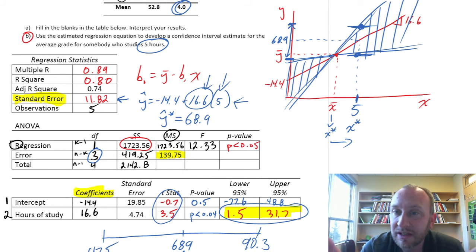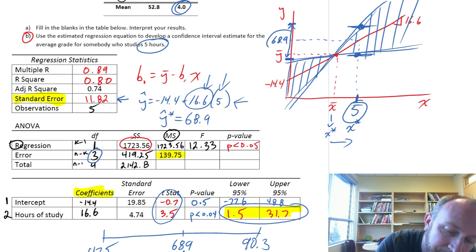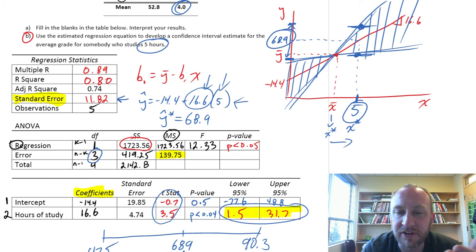Now, we can also use it for estimation. So, give me some value for the independent variable, here, 5, and I can estimate that the average grade for somebody who studies five hours a week is 68.9%. So, I've got a point estimate of that average value of y.